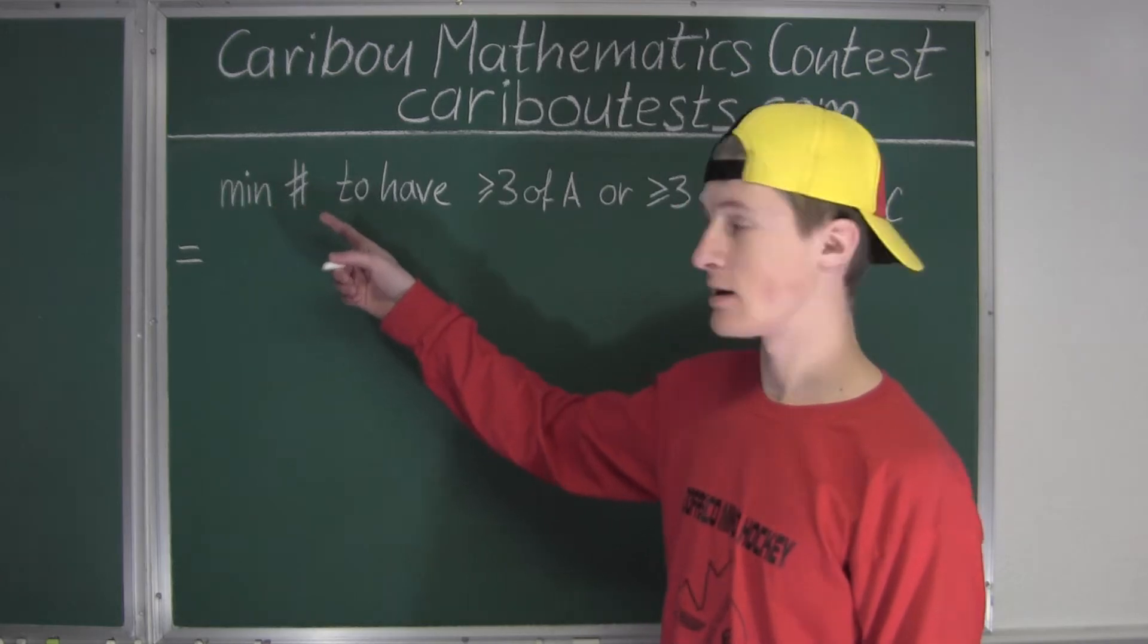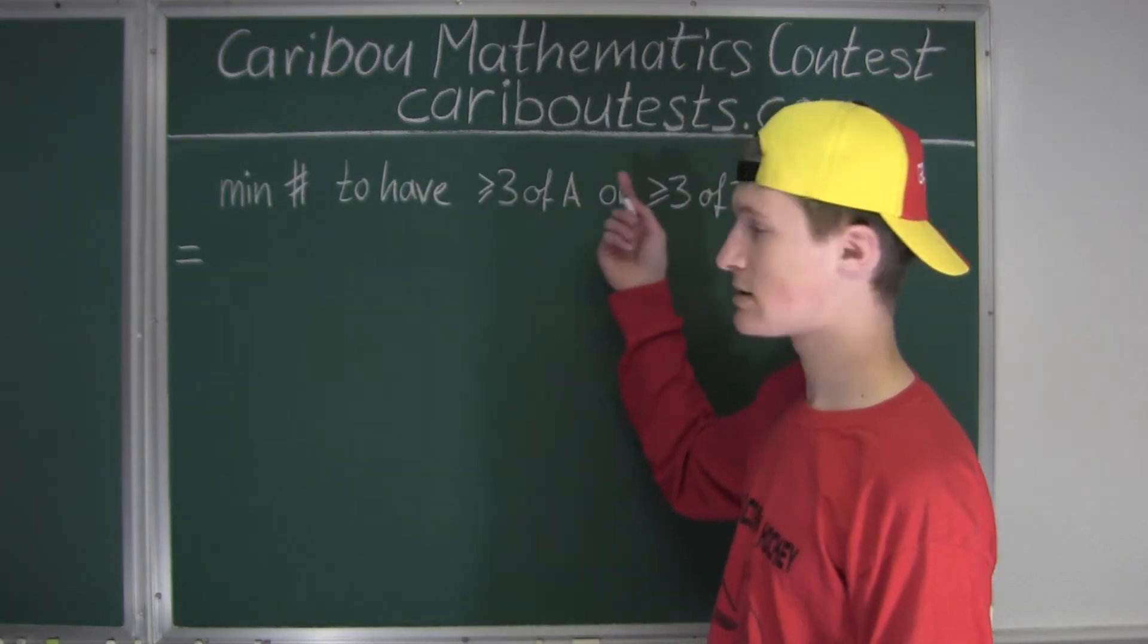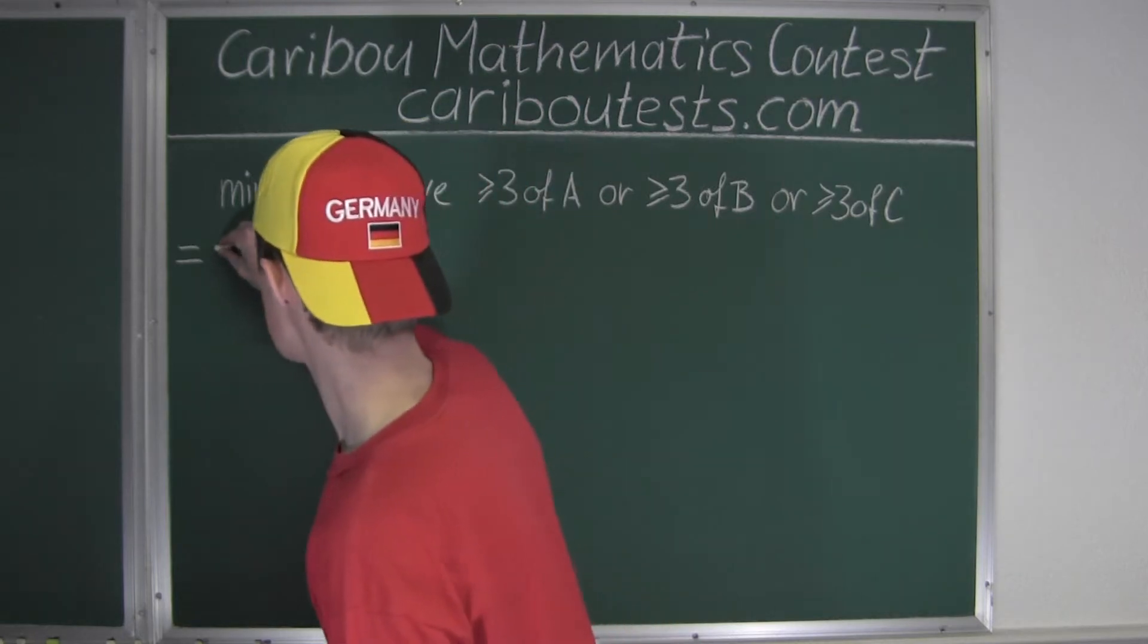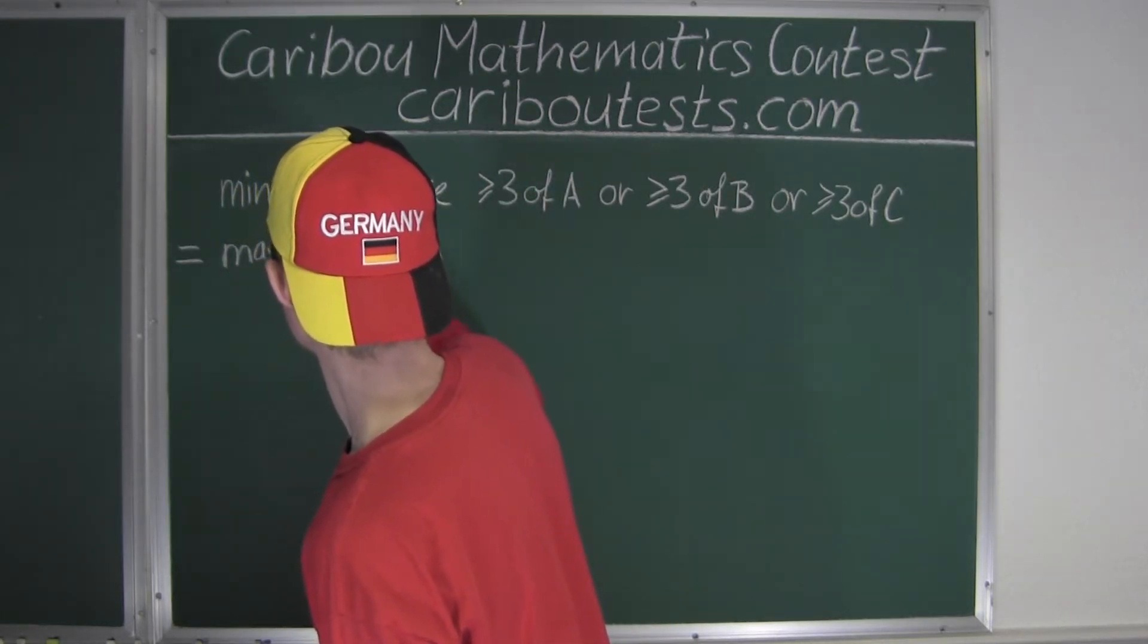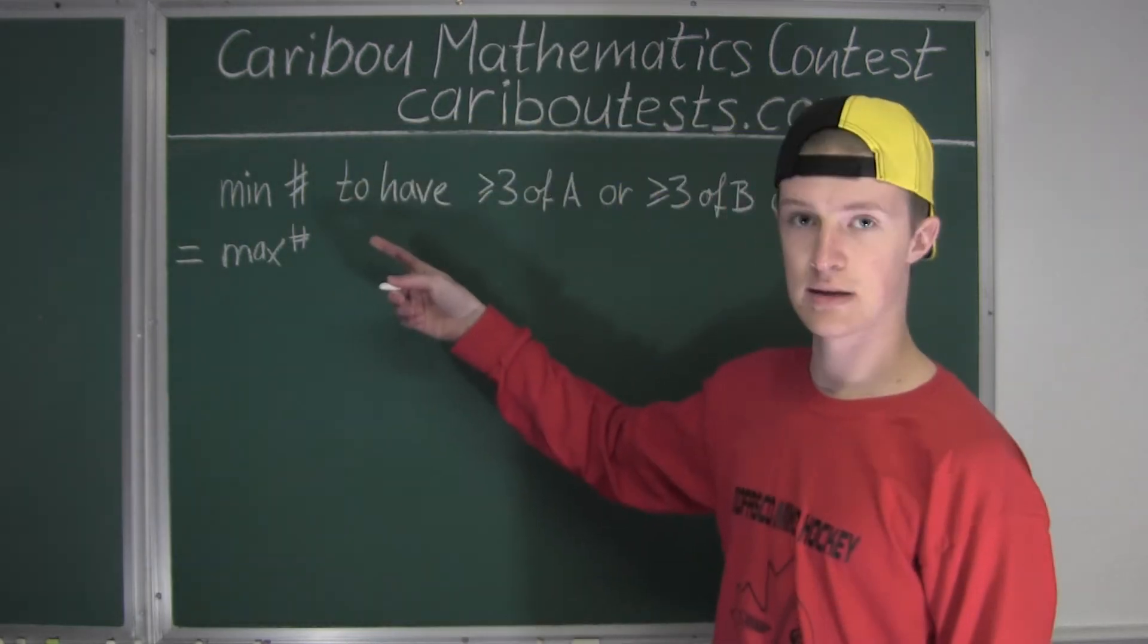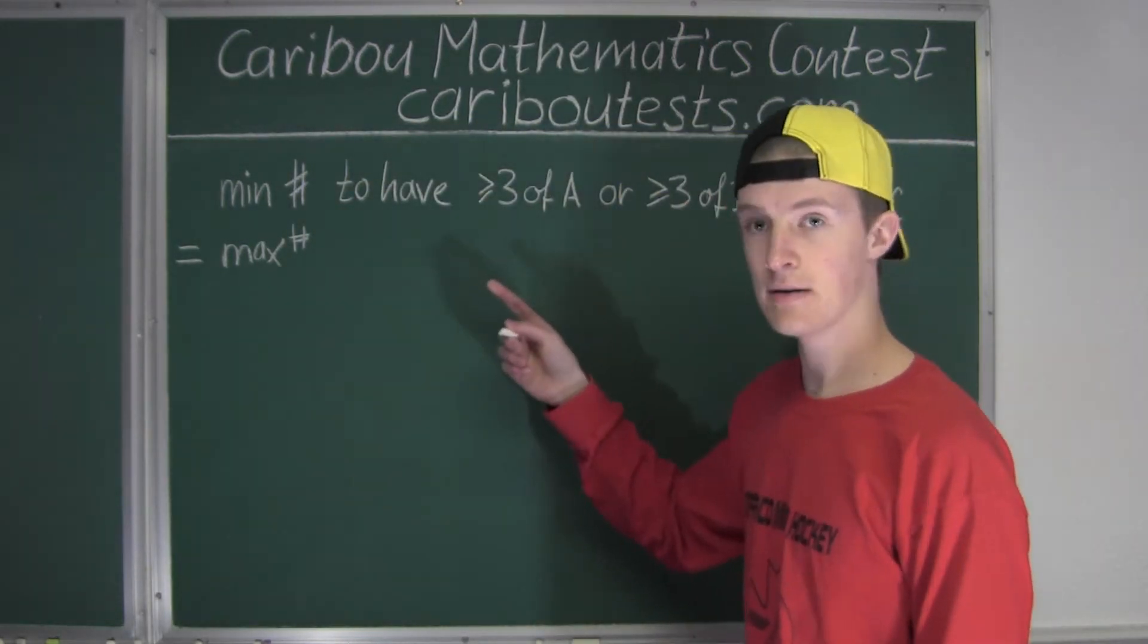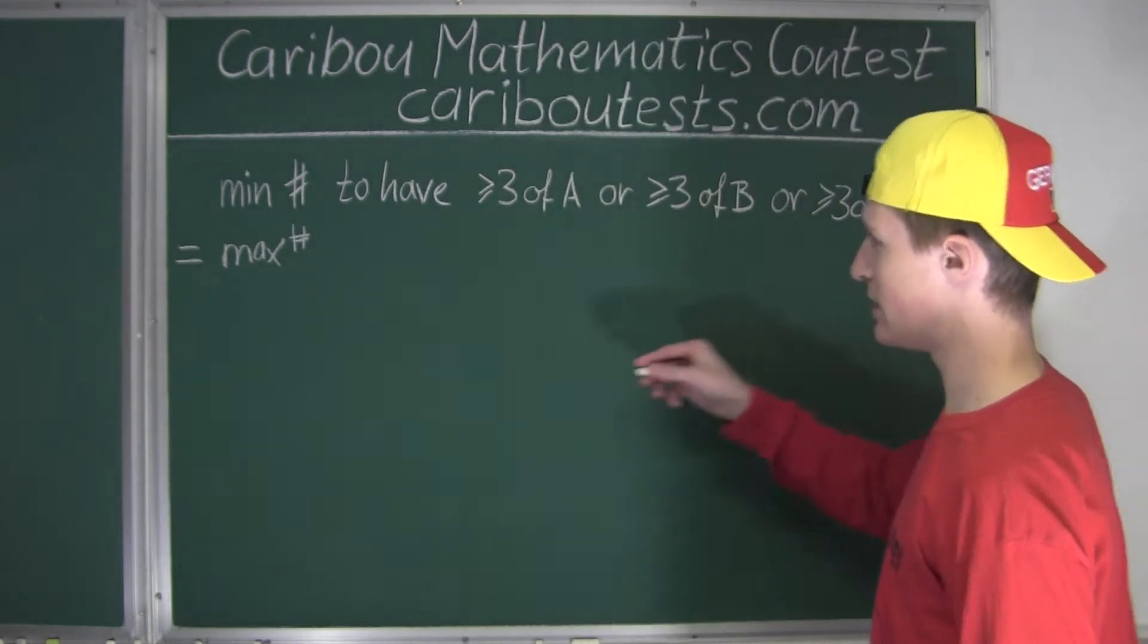So what we will do is instead of finding the minimum number such that this condition is satisfied, we will find the maximum number such that this condition is not satisfied, and then we will add one at the end.